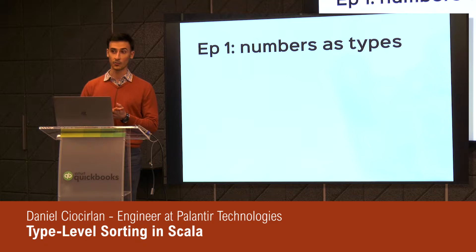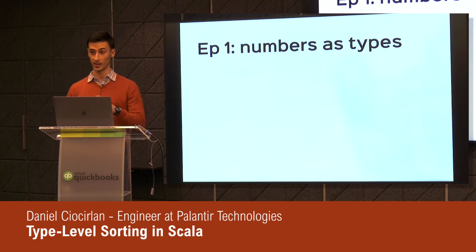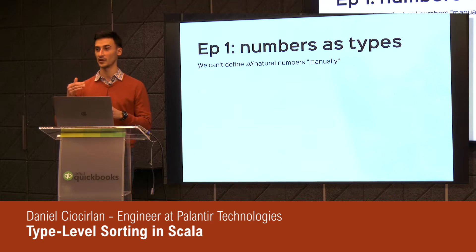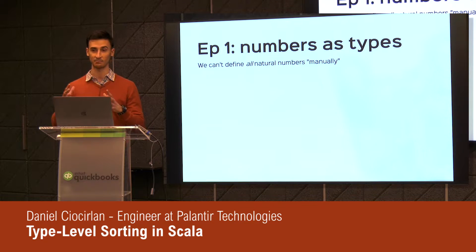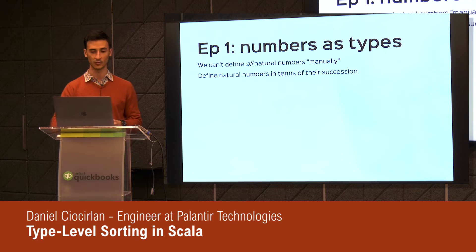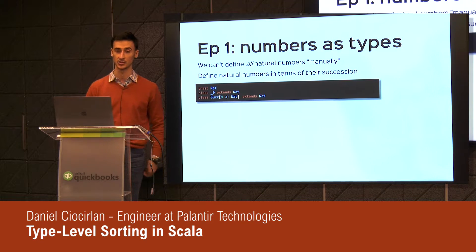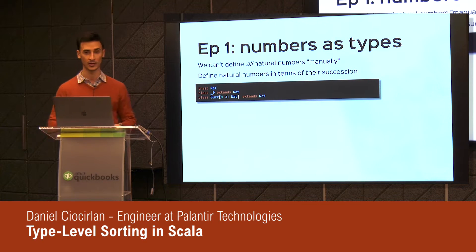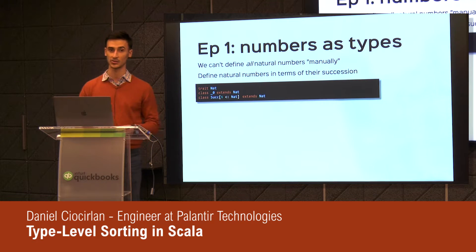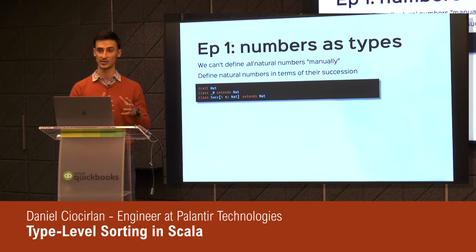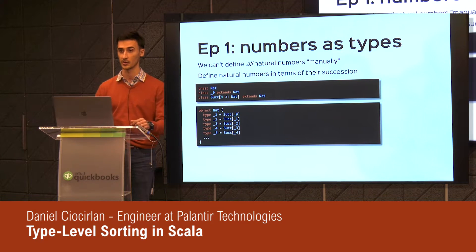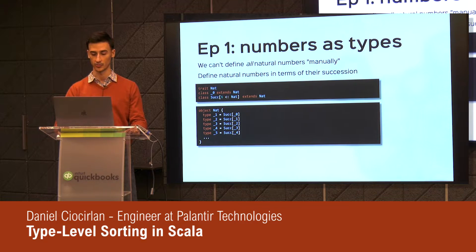I want to work with types as numbers, or numbers as types. I'm defining all natural numbers — not by defining all of them one by one, because I cannot possibly exhaust all the natural numbers, but rather I will define the natural numbers in terms of their succession. I'm going to define a trait that I've denoted Natural. I created a small class called Zero and a class called Successor. By defining Zero and Successor, I basically define all the natural numbers, because any number is the successor of some other number. And I'm defining some type aliases here so that I have something to work on as concrete types.